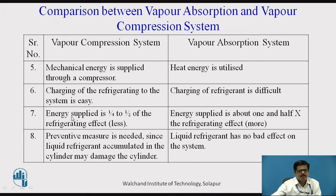In vapor compression system, the energy supplied is high-grade energy — electric power. This energy supplied is one-fourth to one-half of the refrigerating effect, so this energy supplied is much less. So COP is higher, performance is better. Whereas in case of vapor absorption system, we are supplying low-grade energy, that is heat. Energy supplied is heat energy in case of vapor absorption system — it is more than about one-and-a-half times the refrigerating effect. Therefore, the COP of this system is comparatively very less.